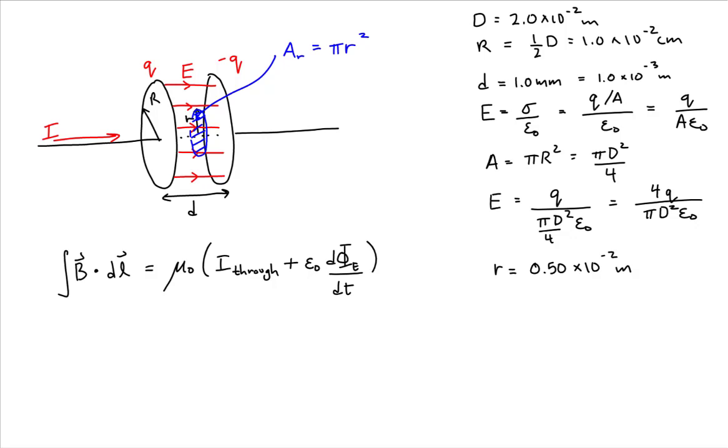This Ampere-Maxwell law equation tells us that a magnetic field can be created by a current through a loop or by the time rate of change of magnetic flux.